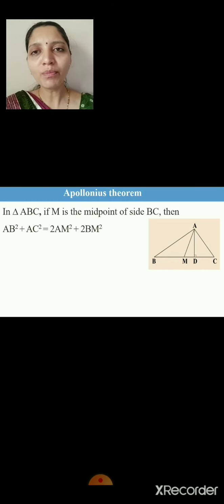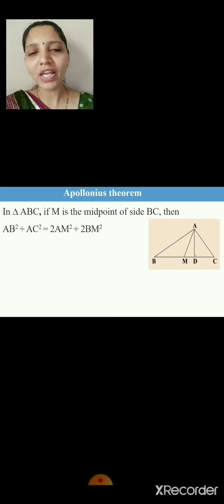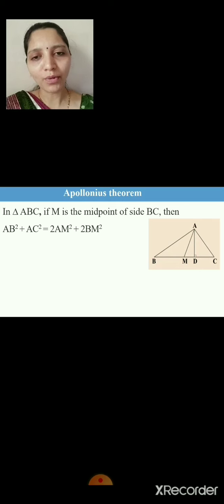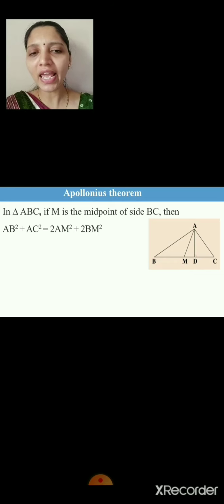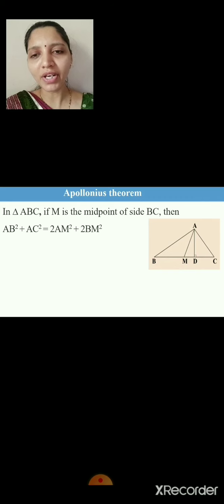In the previous two applications of Pythagoras theorem we took acute and obtuse angles separately, but in Apollonius theorem we consider both together in one triangle. Here in triangle ABC, M is given as the midpoint of BC, so AM becomes the median of triangle ABC. We need to prove the statement AB² + AC² = 2·AM² + 2·BM².